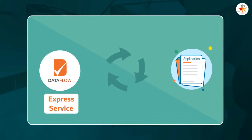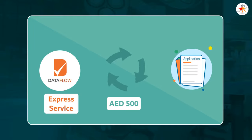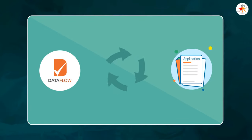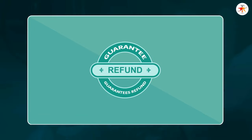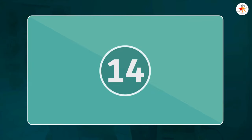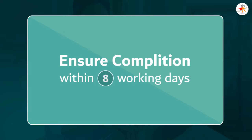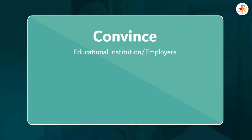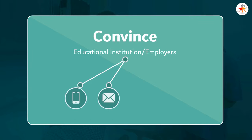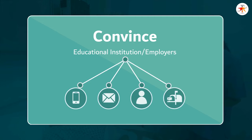One way to speed up the data flow application process is by registering for the express service offered by Data Flow, at an additional cost of 500 UAE dirhams. Data Flow guarantees a refund if the verification process takes beyond 14 working days under this service. Alternatively, using the regular service, you can help ensure the PSV process is completed within 24 working days by convincing your educational institution and previous employers to respond speedily to any queries from Data Flow — by phone, email, in person, or by post — without any additional cost.